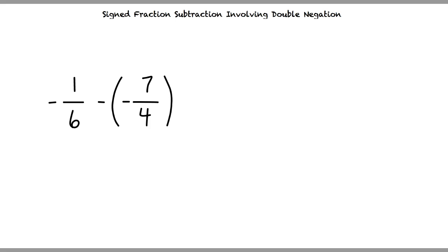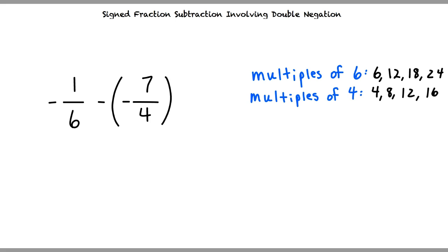Let's take a look at the multiples of each of our denominators. The multiples of 6 are 6, 12, 18, 24, and so on. The multiples of 4 are 4, 8, 12, 16, and so on.